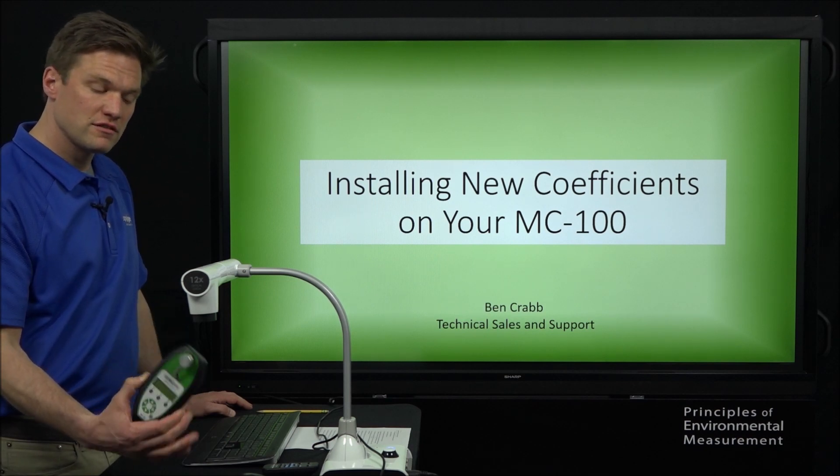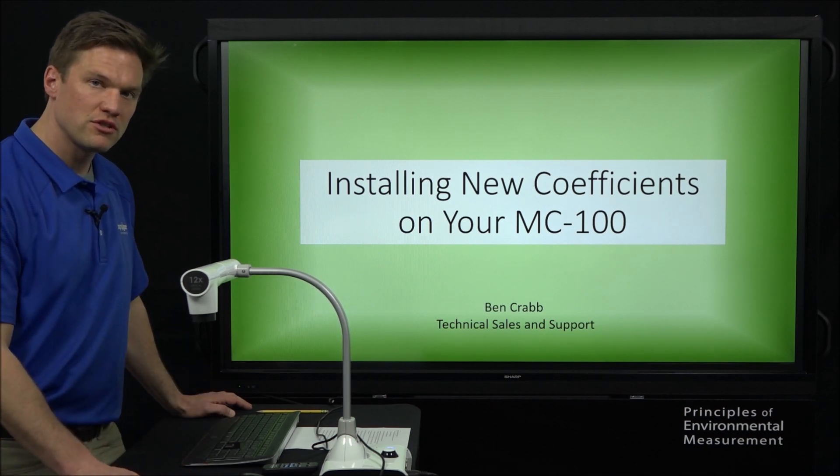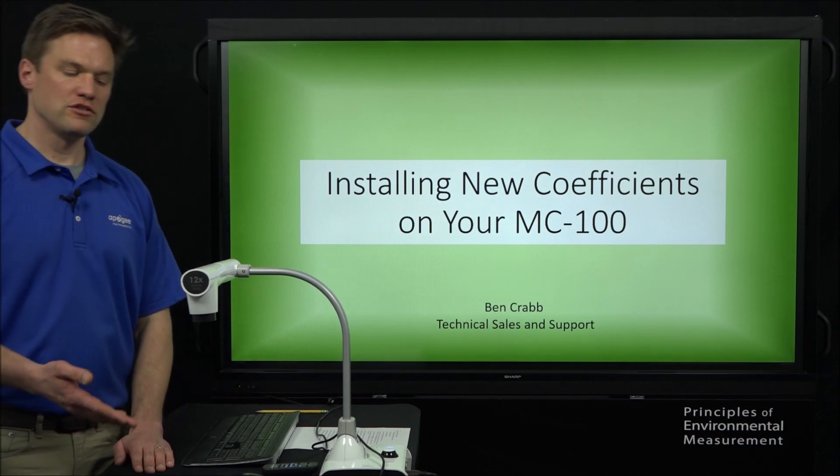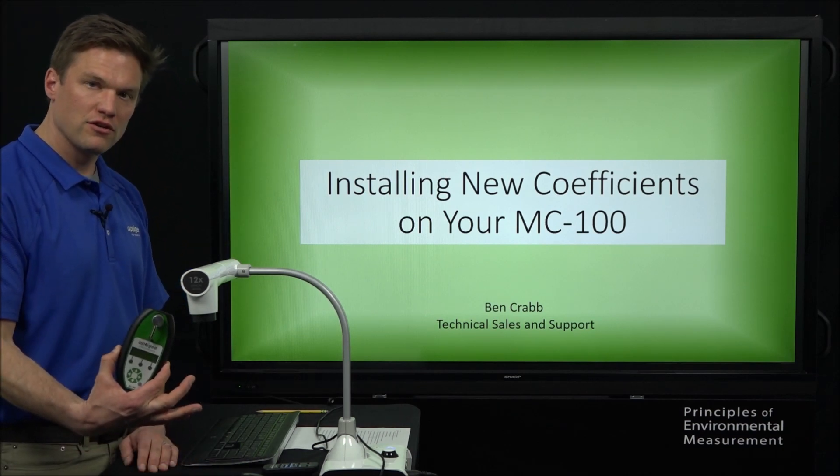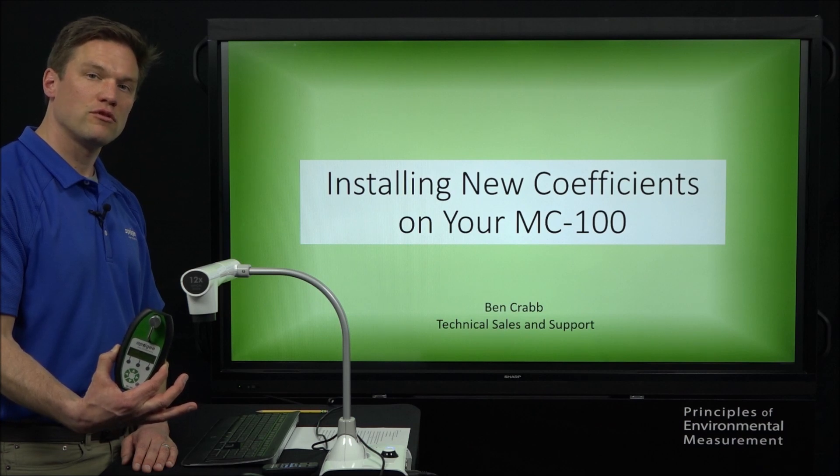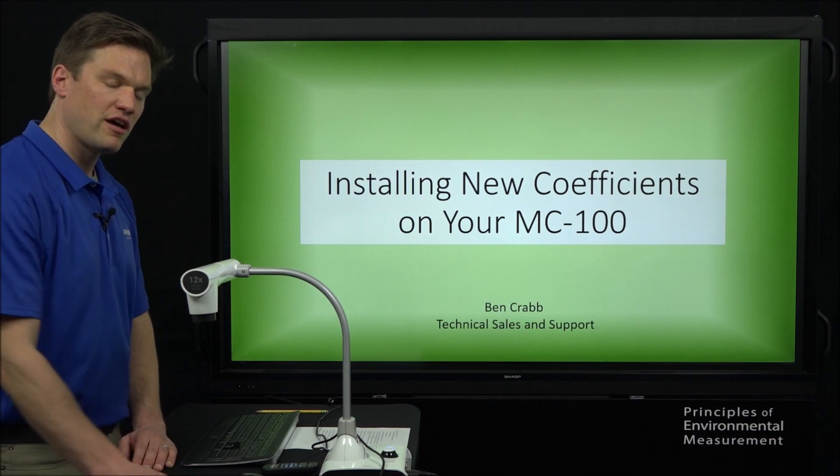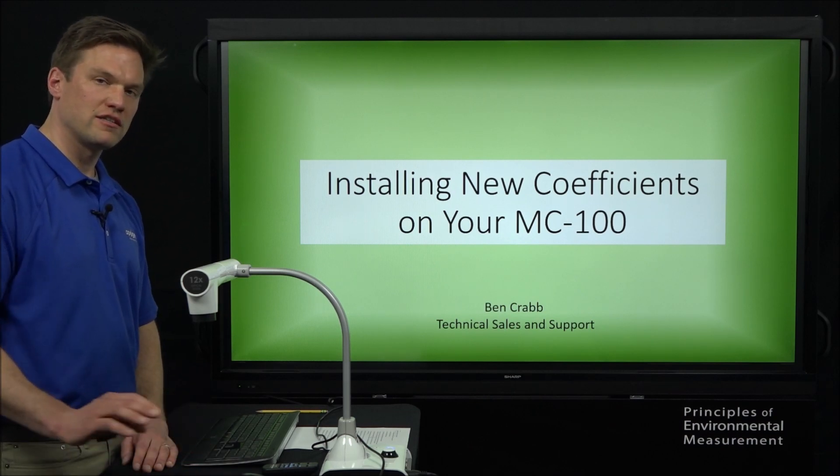We actually have two new sets for two new species that we can measure accurately: cannabis and grapes. I'll briefly go over how this meter takes measurements of absolute chlorophyll concentration, and then we'll go into how to get those new coefficients, select them, and start taking measurements.